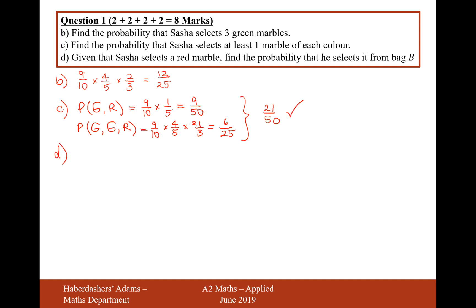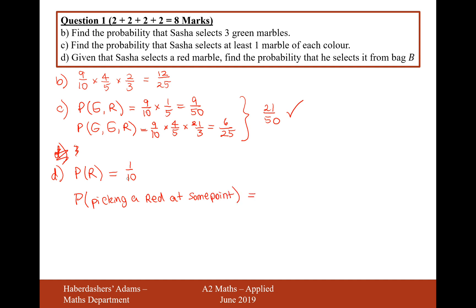Moving on to the difficult question, part D: given that Sasha selects a red marble, find the probability that he selects it from bag B. The probability of going straight for a red from bag A is one tenth. So the probability of picking a red at some point is one out of ten plus 21 out of 50, which is five over 50 plus 21 over 50, giving 26 over 50. That's the probability of picking a red at some point.